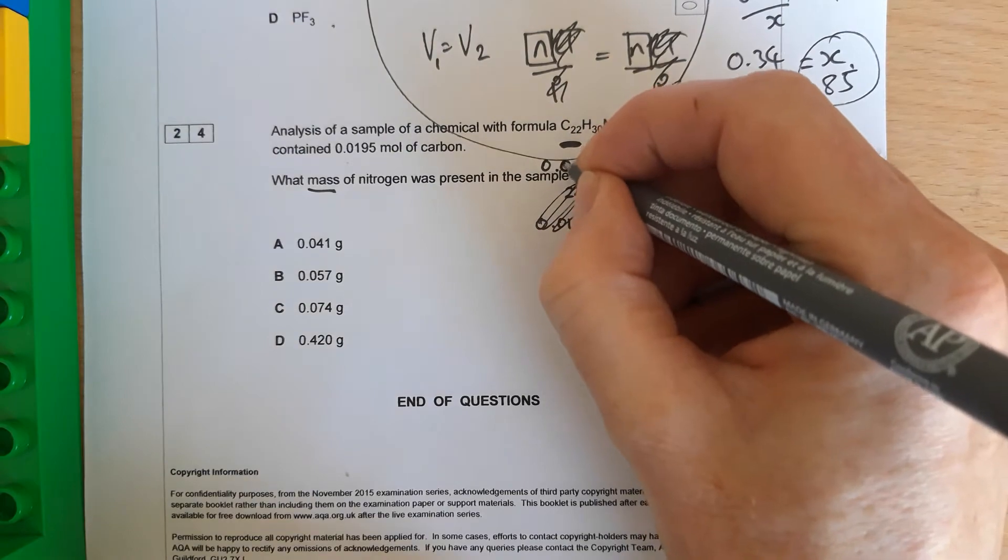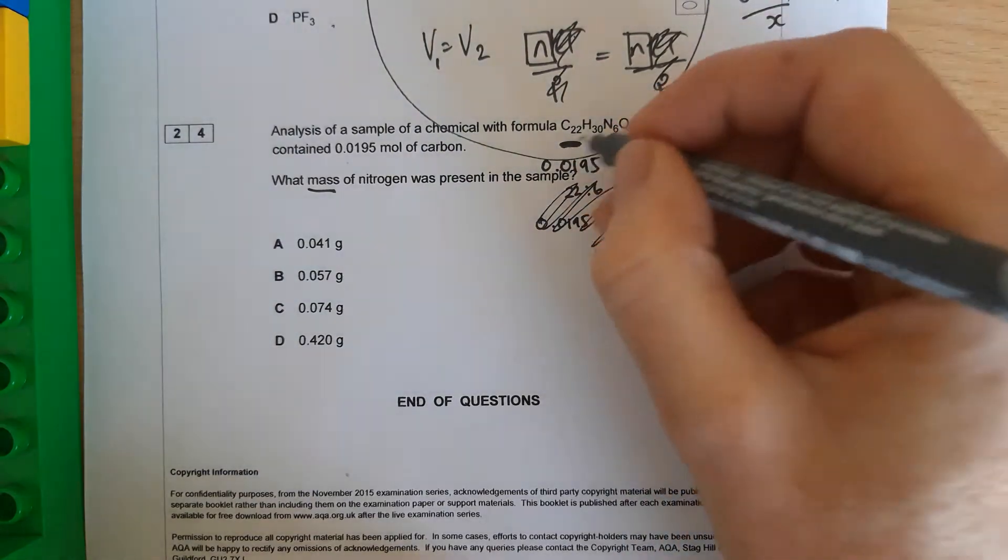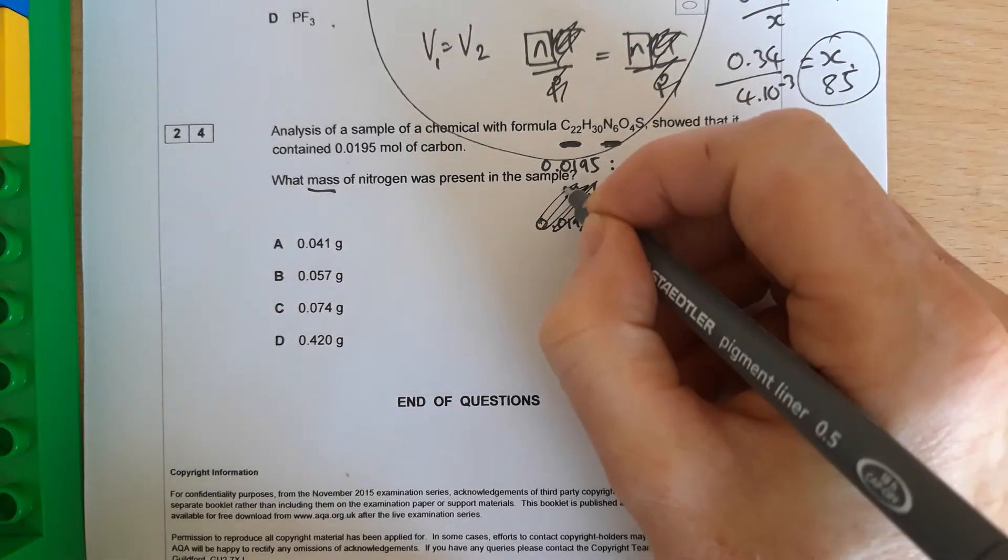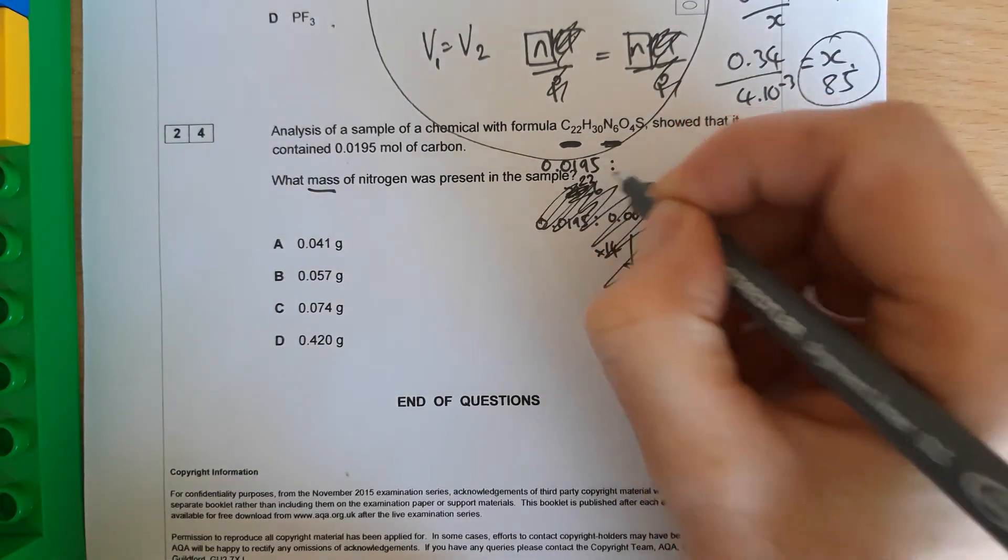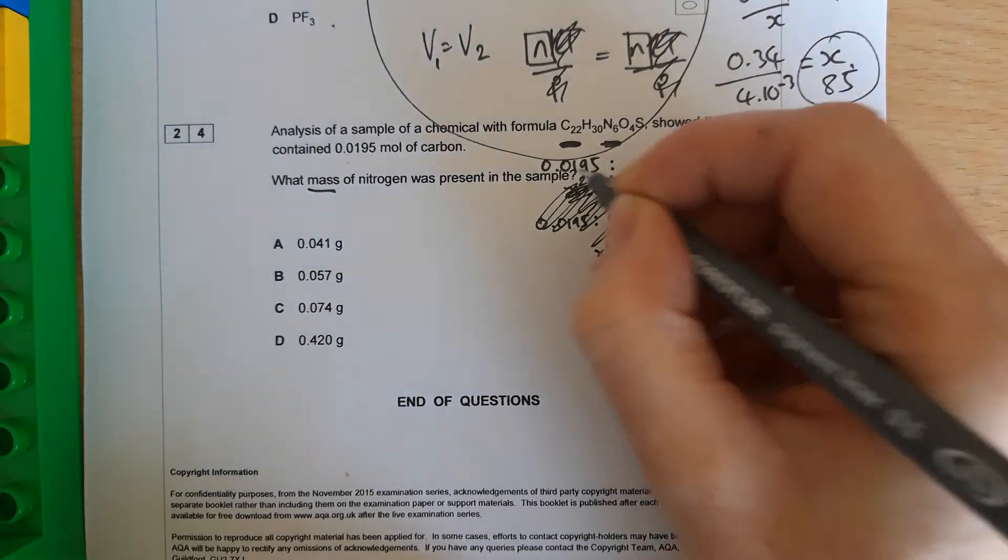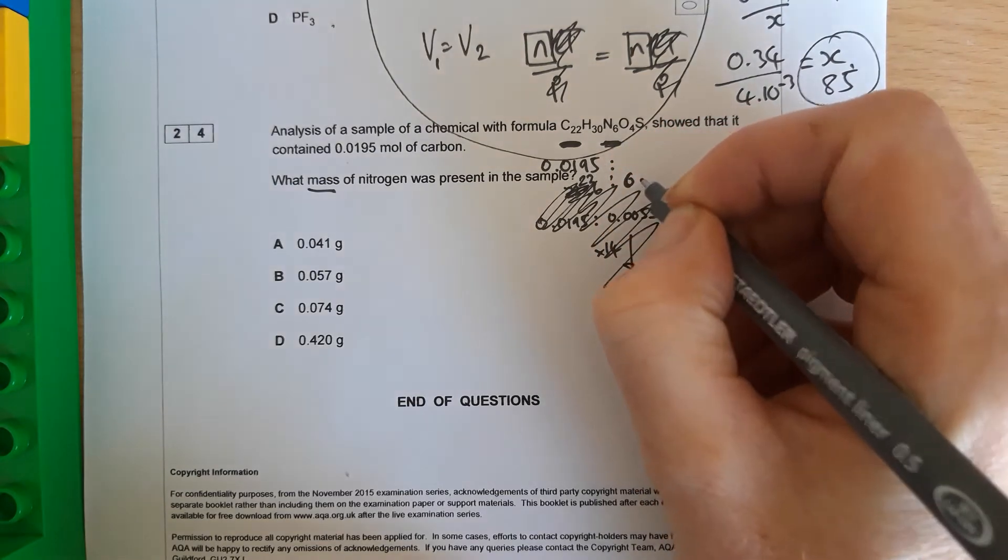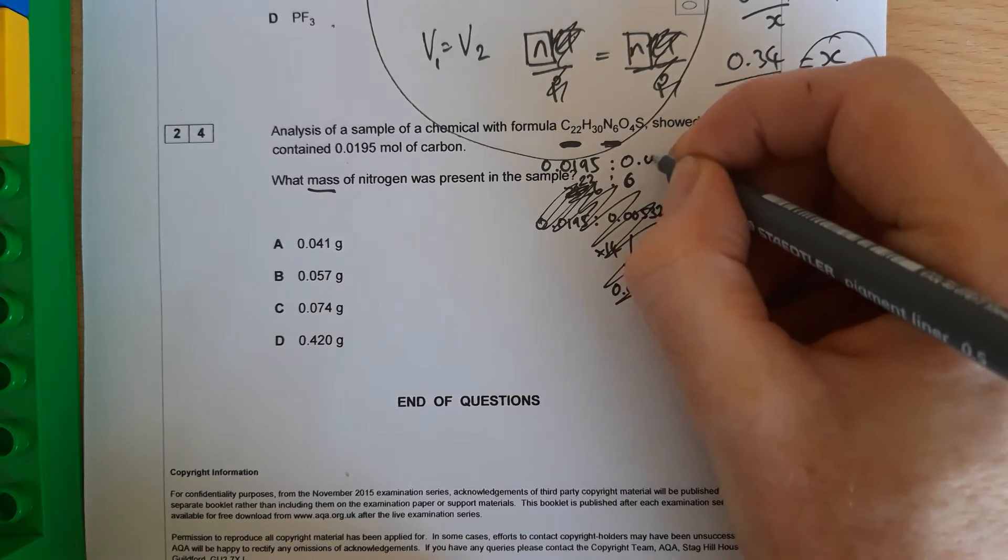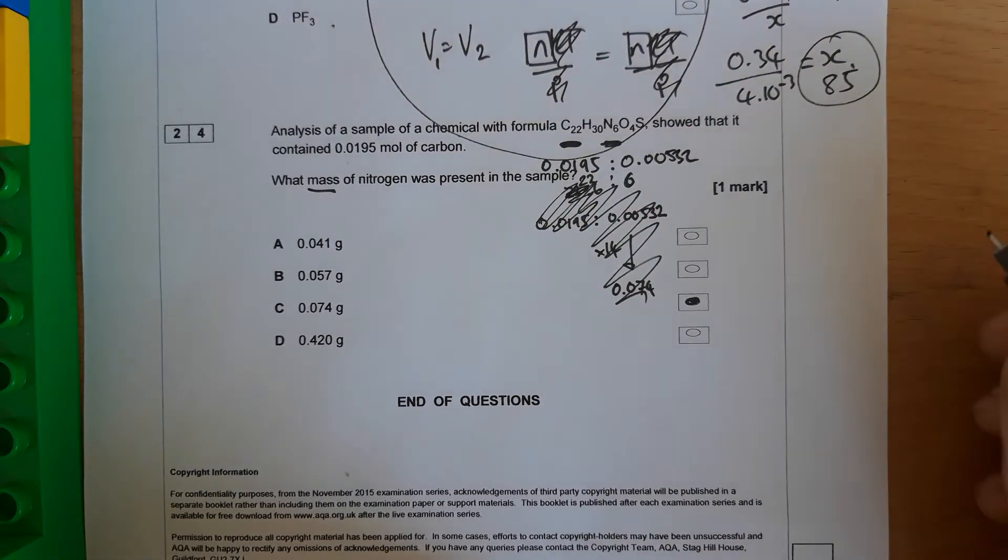So if you've got 0.0195 moles of carbon, if you take this number, it's a 22 to 6 ratio. If you take this number, divide it by 22 and times by 6, that'll tell you how many moles of nitrogen you've got, which is 0.00532 moles of nitrogen.